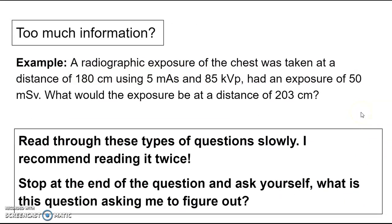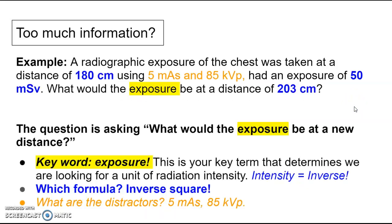Okay, here's another example. Radiographic exposure of the chest was taken at a distance of 180 centimeters using 5 mAs and 85 kVp and had an exposure of 50 millisieverts. What would be the exposure at a distance of 203 centimeters? Again, I want you to stop, go back through, read this question slowly, read every word. And then at the end, I want you to figure out what is this question really asking me? So we're going to highlight that on this page here.